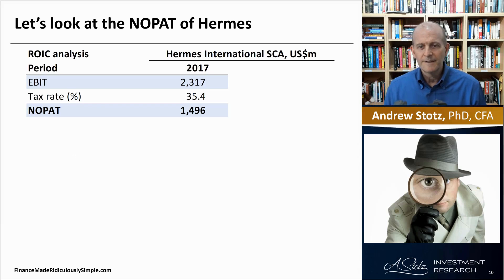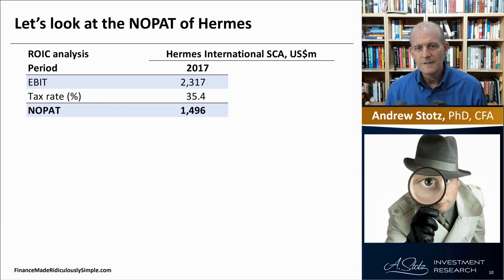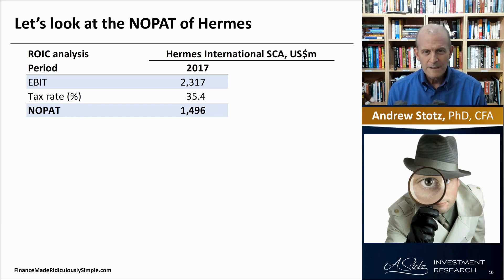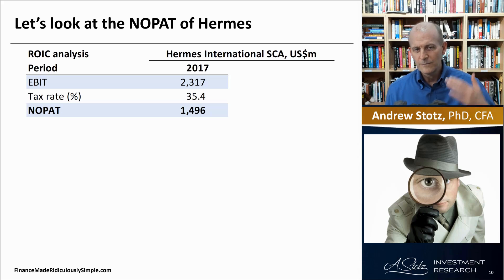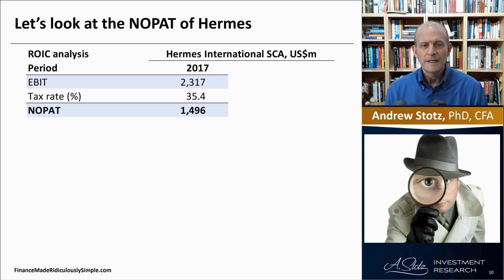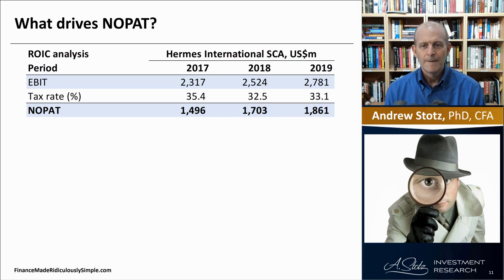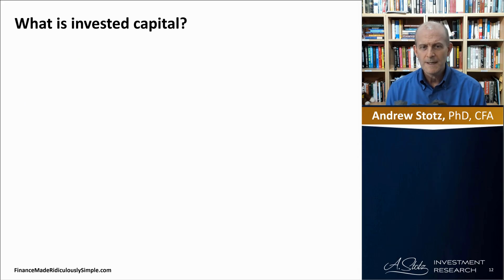Let's look at Hermes in a little bit more detail. We can see the EBIT is 2,317. The tax rate is 35%, so NOPAT is 1,496. In other words, it's always going to be lower than the EBIT. And we can calculate that over time, and you can see it's rising over time.